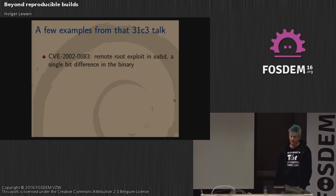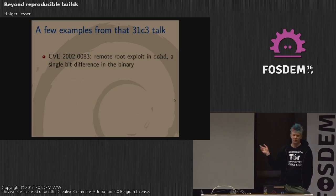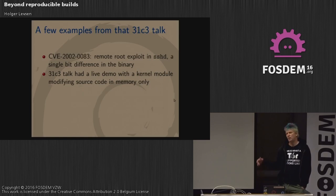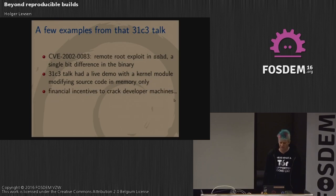One example: there was a remote root exploit in SSHD where the only difference in the binary was a single bit. The error was the code used greater-than instead of greater-than-or-equal-to, and the difference in the binary is one bit in a 500 kilobyte binary. One bit can have a huge impact. They also had a live demo with a kernel module which modified the source in memory but not on disk. If you look at the code, it looks fine; if you compile it, you get a backdoor compiled in. It wasn't just a proof of concept, but it's possible.